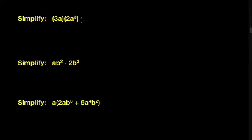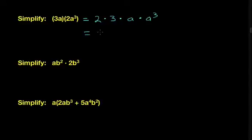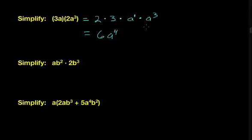This is just one big multiplication problem, so I'll reorder the terms to put like terms next to each other: 2 times 3 times a times a cubed. I know 2 times 3 is 6. And a times a cubed — remember, a single variable always has a hidden exponent of 1 — so a to the 1 times a cubed is a to the 1 plus 3, which is a to the 4th. So the answer is 6a to the 4th.